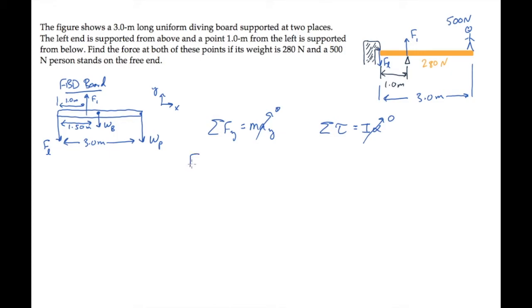When we sum forces in the vertical or y direction, we have F1 in the positive y direction, and three downward forces. There are two unknowns in this equation, so let's leave it for now and sum torques.